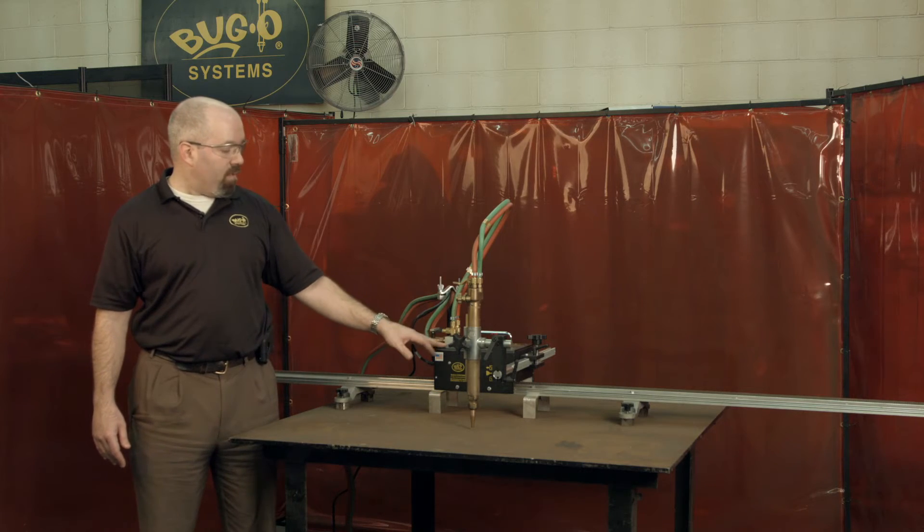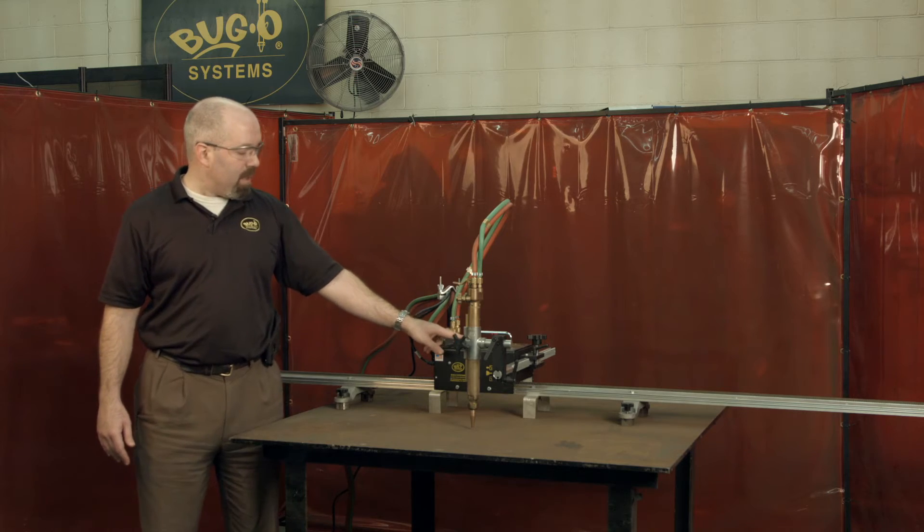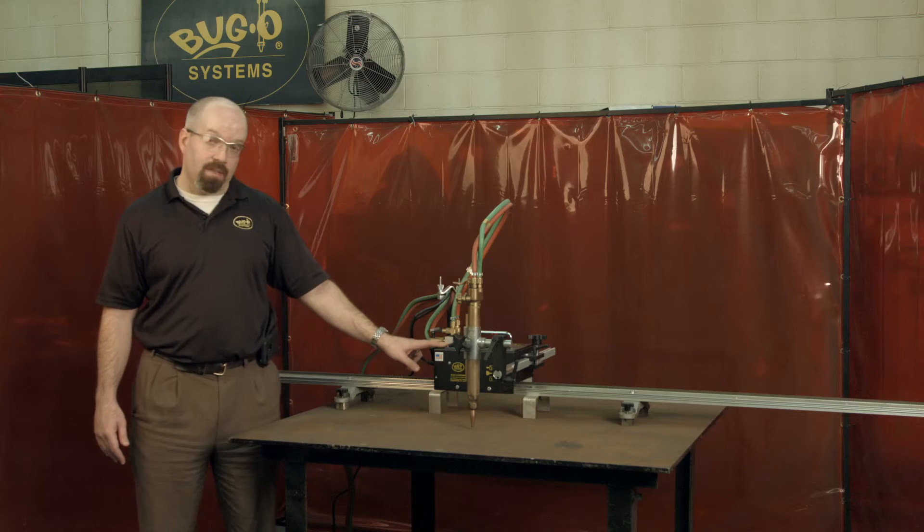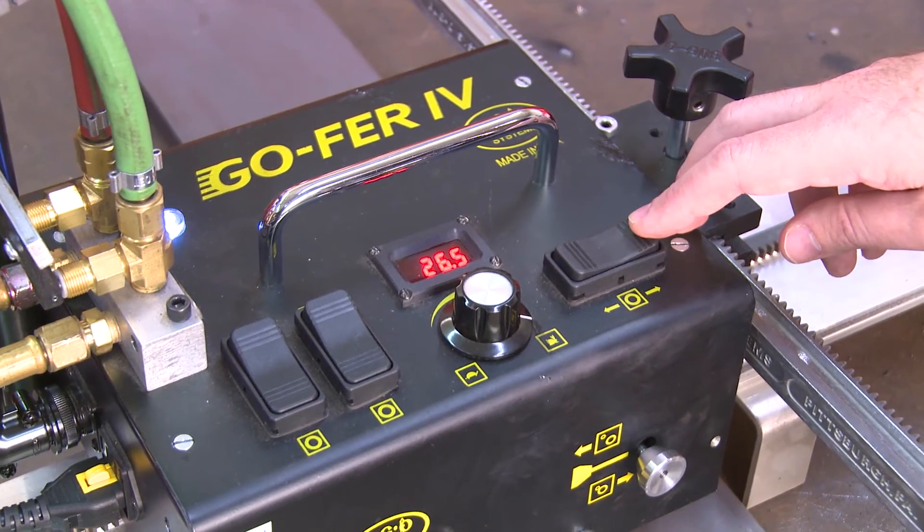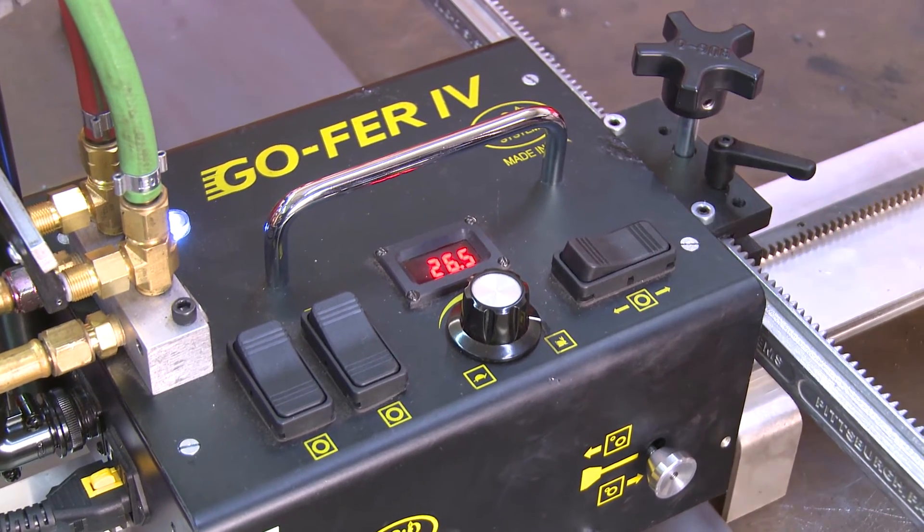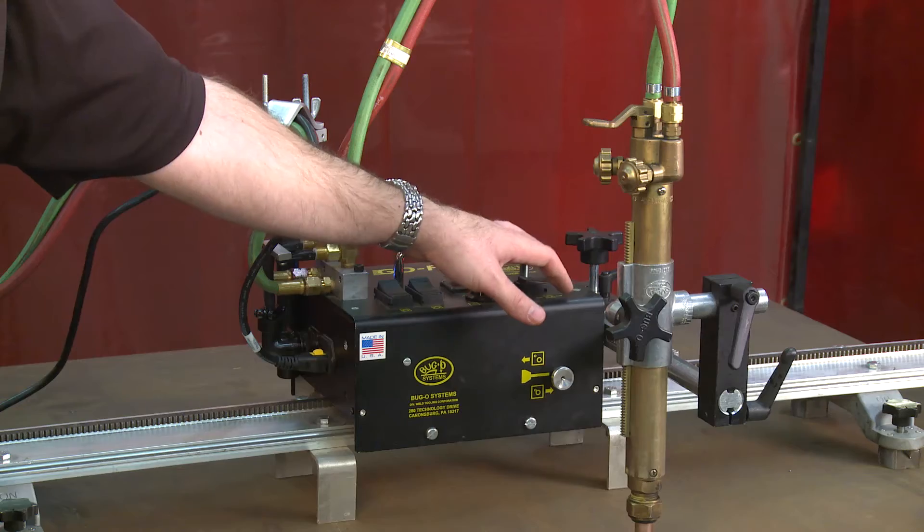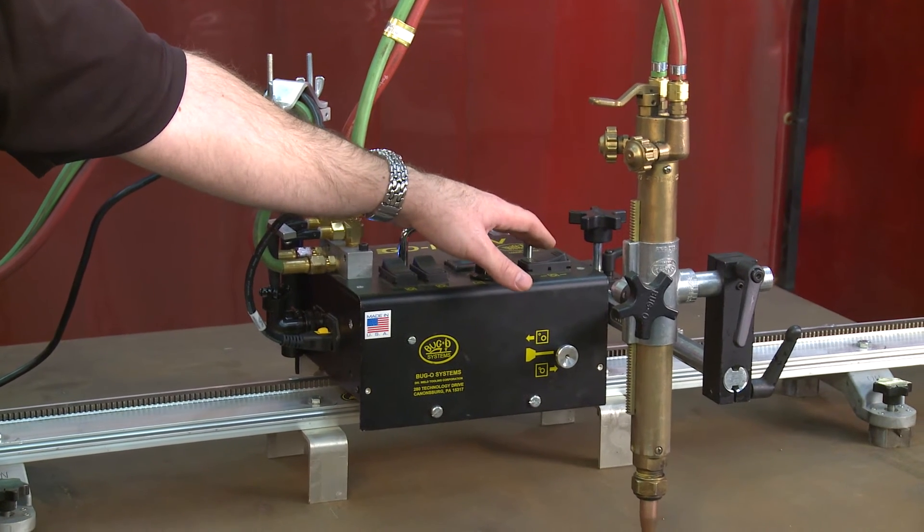A few of the other features for the Gopher 4. It does have nice big industrial rocker switches for your two weld contactors. This machine can actually handle two welding guns at the same time. It has a digital speed readout for your speed control and it is pre-settable and adjustable on the fly. And then you have a rocker switch for direction on and off.